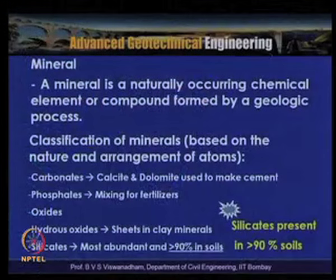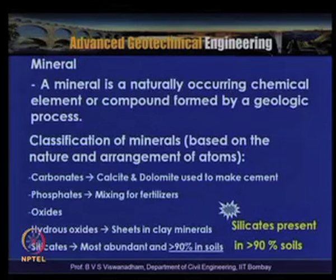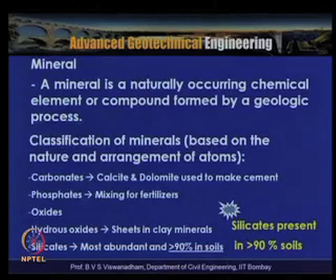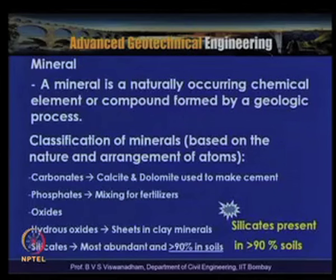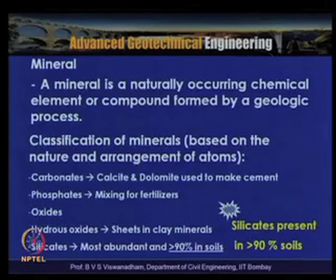Minerals are classified based on the nature and arrangement of atoms into: carbonates, phosphates, oxides, hydrous oxides, and silicates. Carbonates include calcite and dolomite; phosphates are used in fertilizers; hydrous oxides form sheets in clay minerals; and silicates are the most abundant, present in more than 90% of soils.